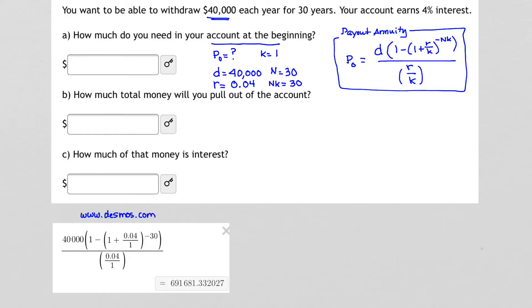I get that P sub 0 equals 40,000 times the quantity 1 minus 1 plus 0.04 over 1, quantity closed, raised to the negative 30 over 0.04 divided by 1. This amount that I get at the end right here is P sub 0, plugging 40,000 in for D, 0.04 in for R, 1 for K, and 30 for NK.